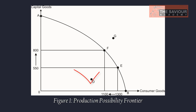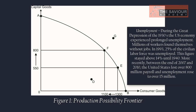What is happening at point D? First, unemployment. During the Great Depression of the 1930s, the U.S. economy experienced prolonged unemployment — millions of workers found themselves without jobs. In 1933, 25% of the civilian labor force was unemployed, and this figure stayed above 14% until 1940. More recently, between the end of 2007 and 2010, the U.S. lost over 800,000 payroll jobs and unemployment rose to over 15 million.